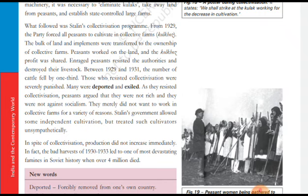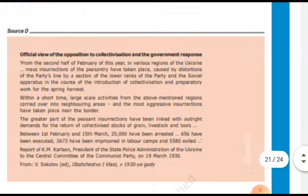In spite of collectivization, production did not increase immediately. Due to the bad harvest of 1930-1932, over 4 million people died within three years. Throughout the country accusations were made, and by 1939 over 2 million were in prisons and labor camps.